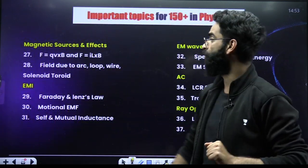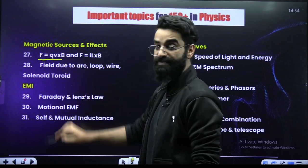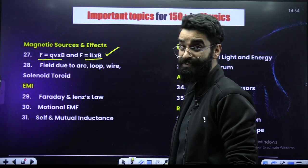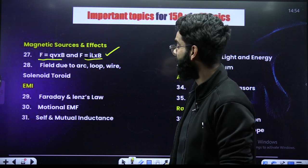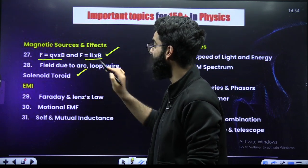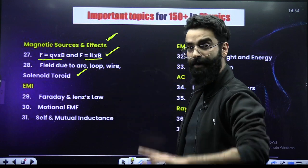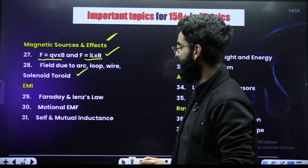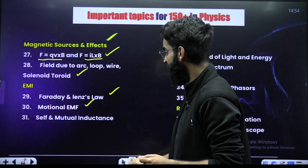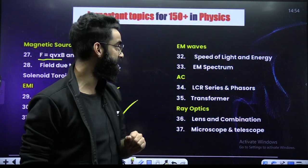Then your magnetic sources and effects. The relations F = QVB and F = IL cross B — these particular results are important. Field due to arc, loop, wire and solenoid/toroid — these are important topics from this chapter. When it comes to EMI: Faraday's law, Lenz's law, motional EMF, self and mutual inductance — these are important topics.